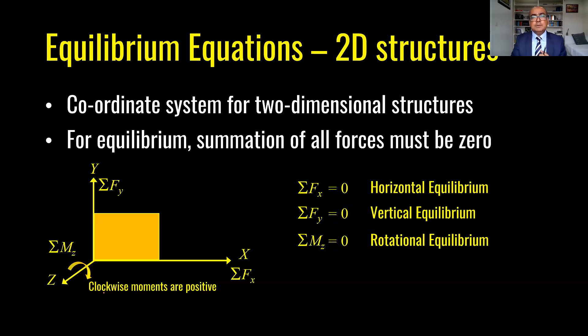Equations of equilibrium are really very important and I will talk about two-dimensional structures. For equilibrium all forces acting on a body should be equal to zero. If it is a two-dimensional system then we need summation of all forces in horizontal direction equal to zero, summation of all forces in vertical direction equal to zero, and summation of moment equal to zero.